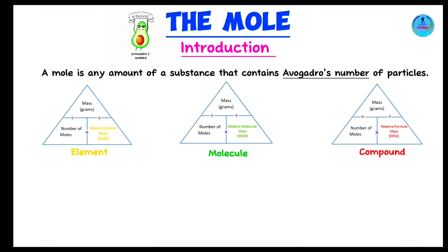Let's give examples to make this clear. Starting with relative atomic mass — this is a value used for elements only. For example, carbon: the relative atomic mass of one mole of carbon is 12. These are values you will always be provided during questions involving moles, so no need to memorize them. The mass of one mole of carbon atoms is 12 grams — this is referred to as the molar mass, which is equivalent to the relative atomic mass of the element.